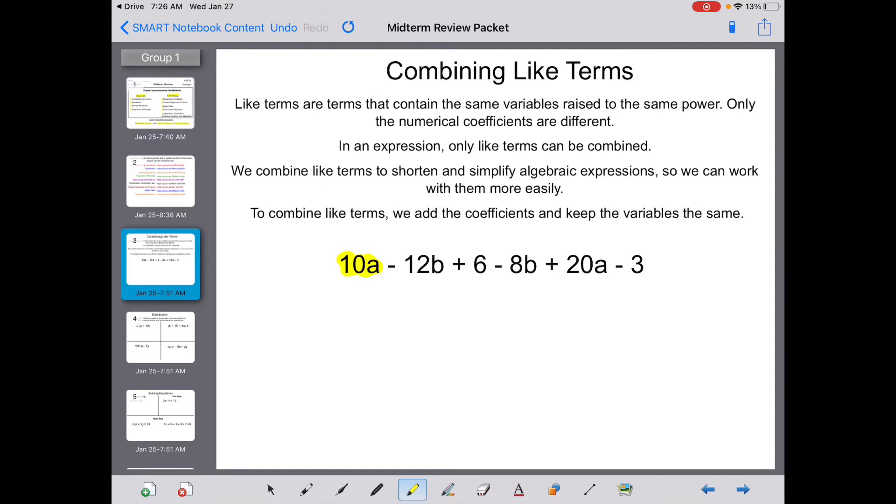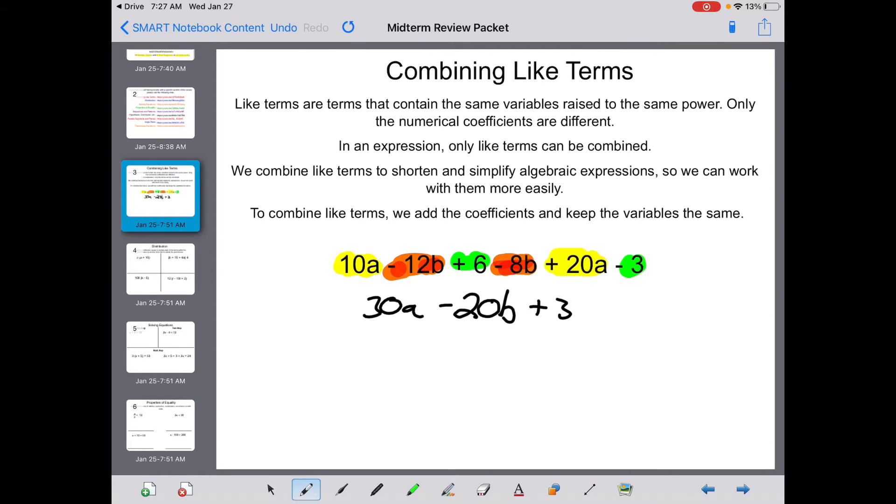So I notice I have a 10a here, and keep the symbol in front, a plus 20a. Well, that's going to make 30a. Then we have a minus 12b and a minus 8b. So what's negative 12 minus 8? That's negative 20b. Last, you have 6 minus 3, which is just a positive 3. You simplified, you can't simplify any further. That's all combining like terms is. You're going to see some like terms examples pop up on your midterm on the multiple choice.